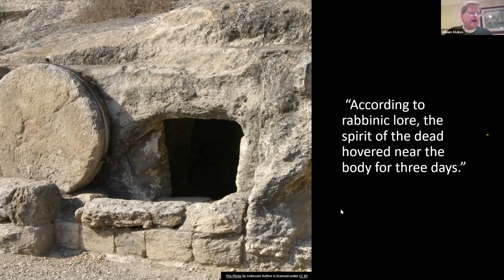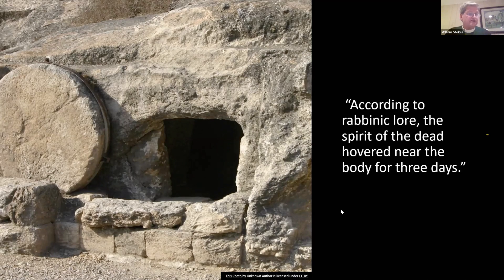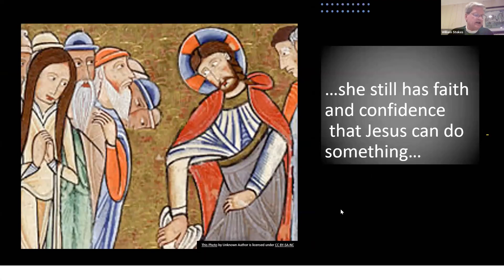According to rabbinic lore, the spirit of the dead hovered over the body for three days. By stating that this is the fourth day, the narrator is assuring us that — like Marley in Dickens' famous tale — Lazarus is most assuredly dead, and we must be convinced of this or nothing marvelous can come of the story. The notation that Bethany was near Jerusalem, only two miles away, is a reminder that Jesus is in enemy territory. In verse 19, we have an instance of John portraying the Jews without apparent vitriol — they are part of the community there to support the sisters, with no overt hostility to Jesus when he shows up.